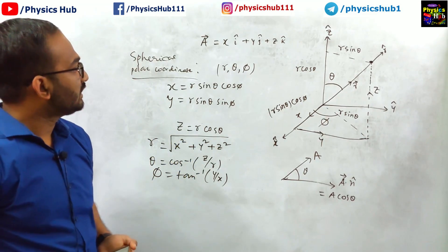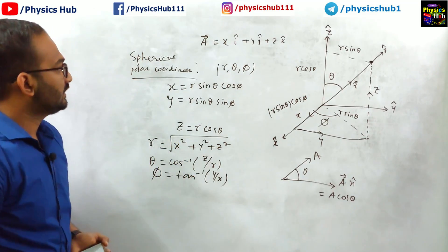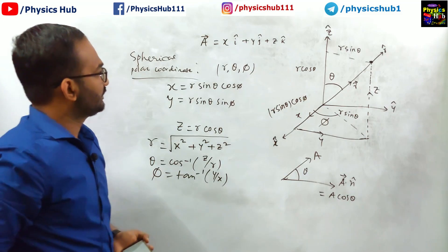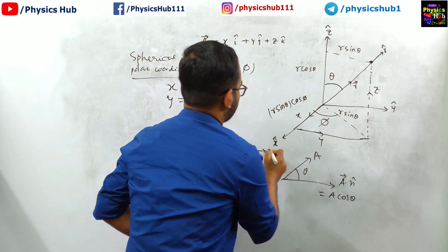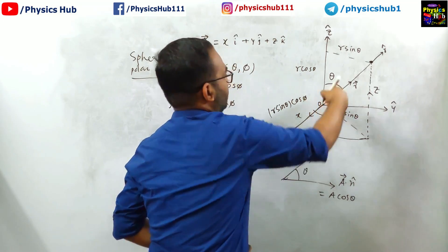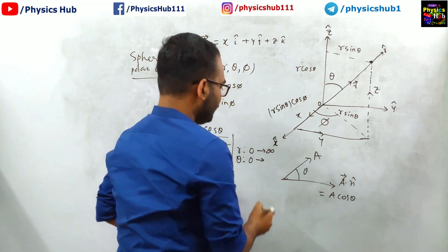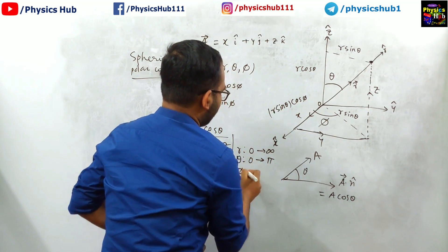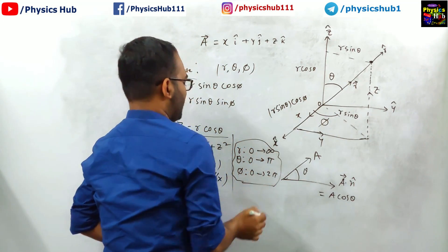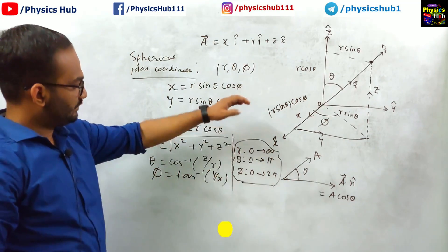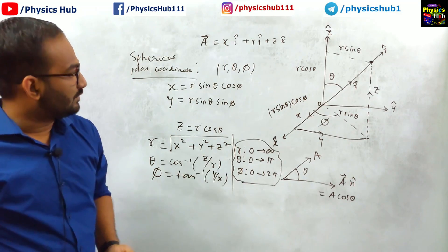Now, let me tell you about the limits of these variables. R can vary from 0 to infinity. Theta can vary from 0 to pi, and phi can vary from 0 to 2 pi. This is the range allowed to these variables R, theta, and phi.